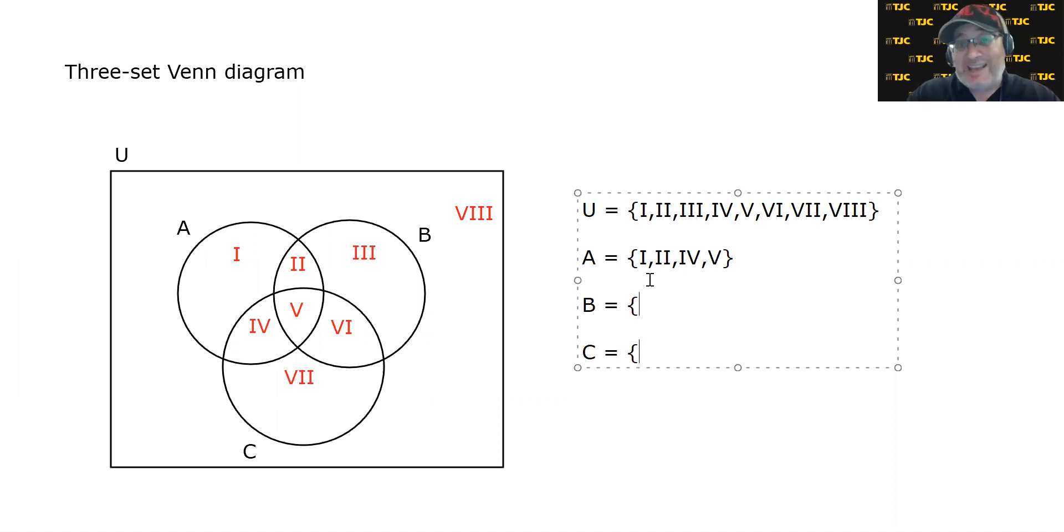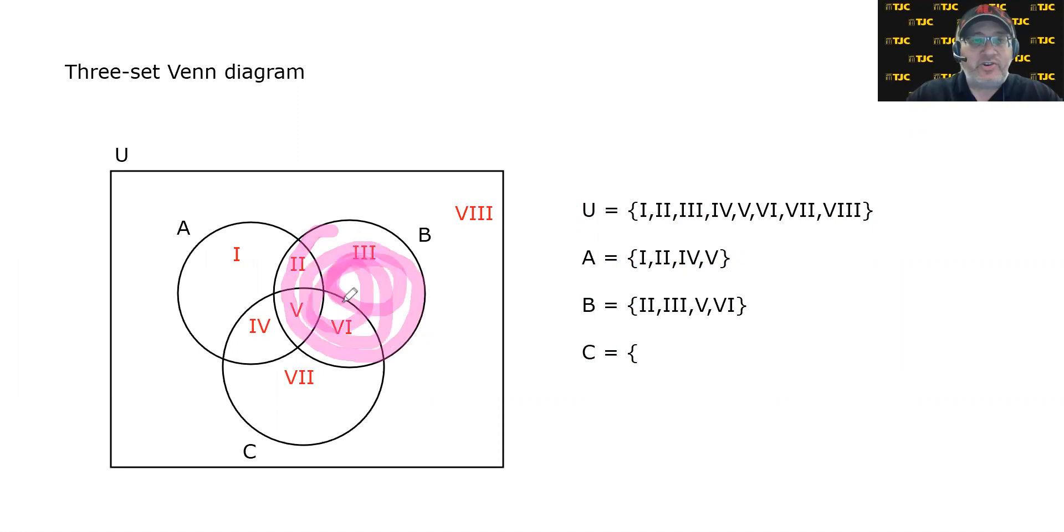As for set B, from least to greatest, it is made up of regions 2, 3, 5, and 6. And again, that can be seen pretty easily by simply shading in circle B and making note of the regions that are shaded.